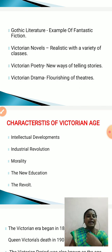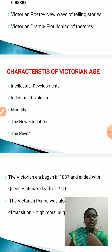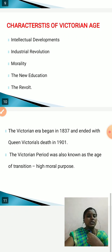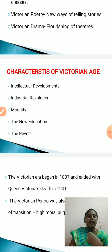We can see the characteristics of the Victorian age: intellectual developments, industrial revolution, morality, the new education, the revolt, and many more. The Victorian era began in 1837 and ended with Queen Victoria's death in 1901. The Victorian period was also known as the Age of Transition with a highly moral purpose. These were the key aspects of the Victorian age in a short note. Thank you.